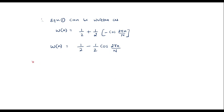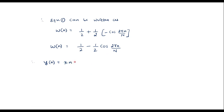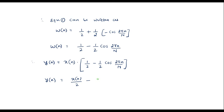Now let me consider Y of N. Y of N is equal to X of N dot W of N, where W of N equals 1 by 2 minus 1 by 2 cos 2 pi N by N. We know that cos theta is equal to e power j theta plus e power minus j theta divided by 2.